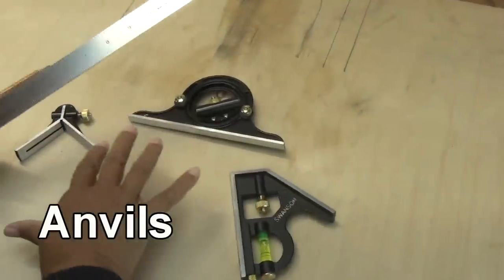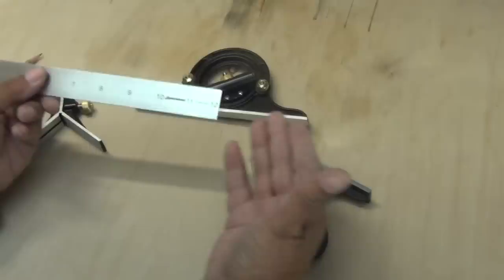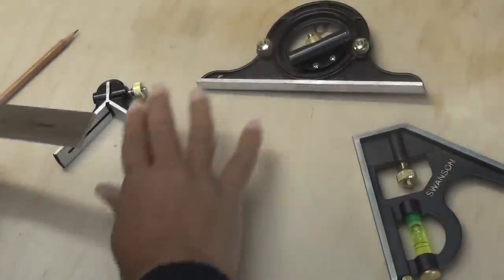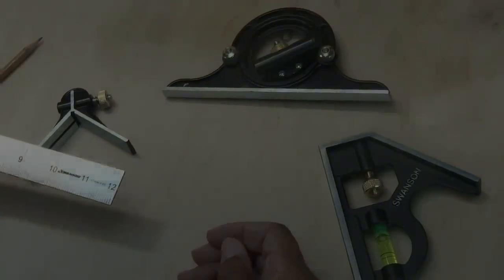Now one of the cool things and lesser-known things about a combination square is that you can buy heads also known as anvils and these anvils attach to the ruler to perform different kinds of jobs.